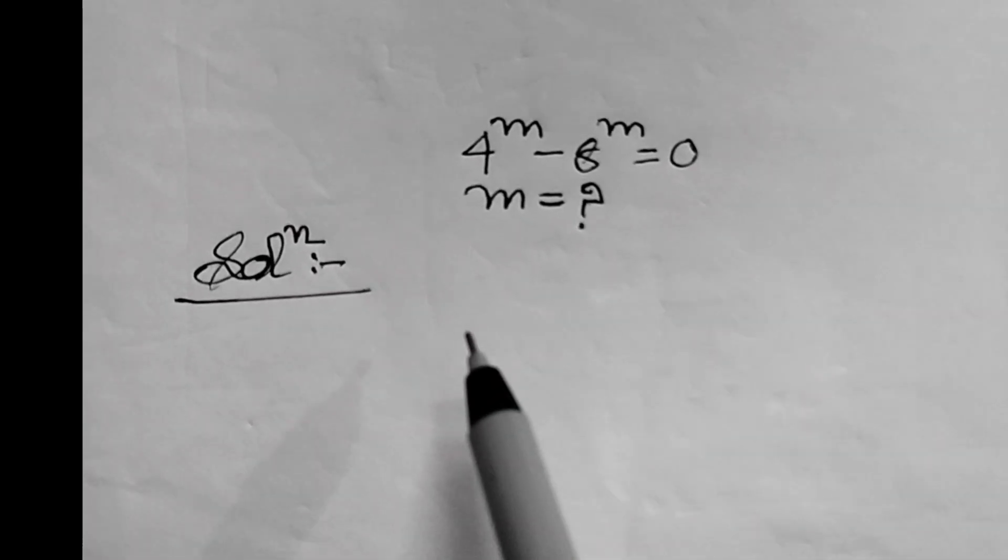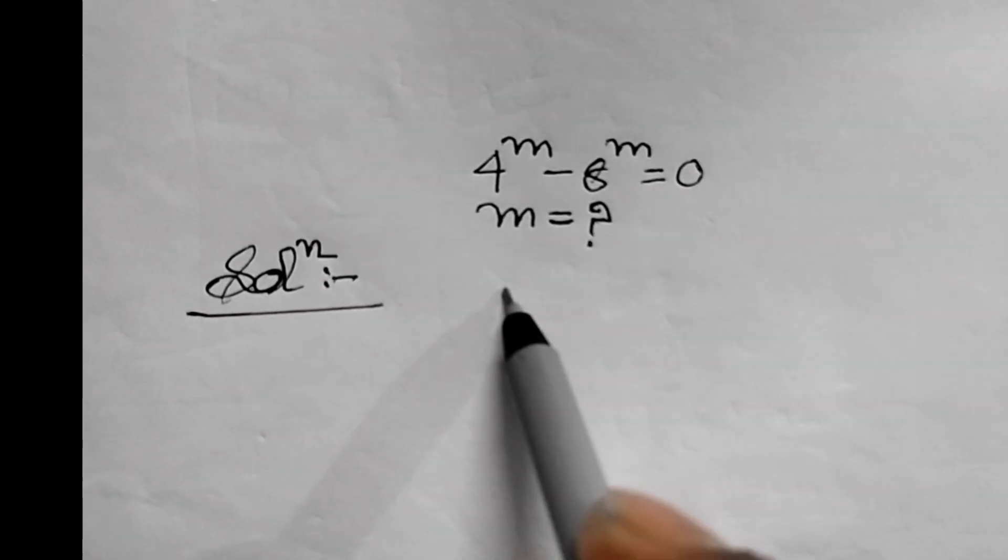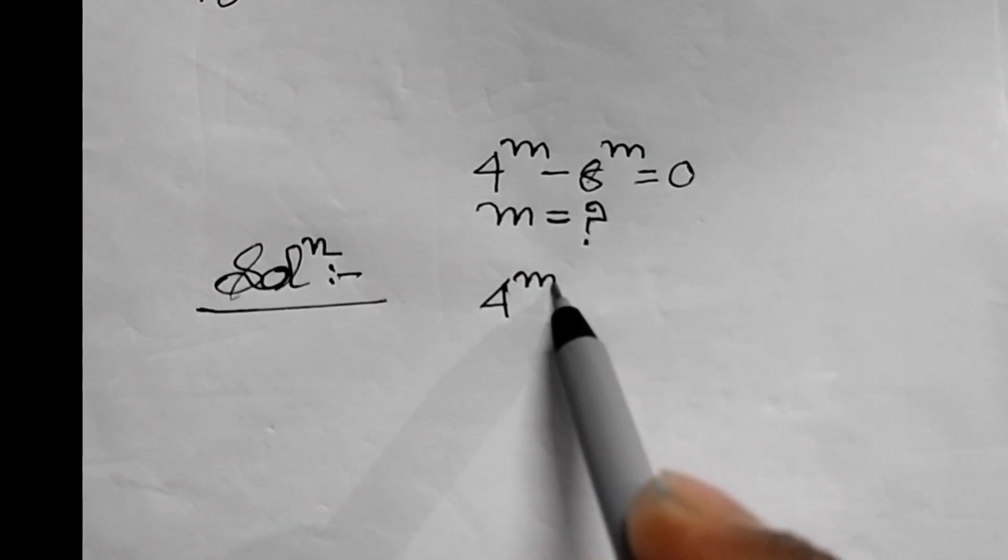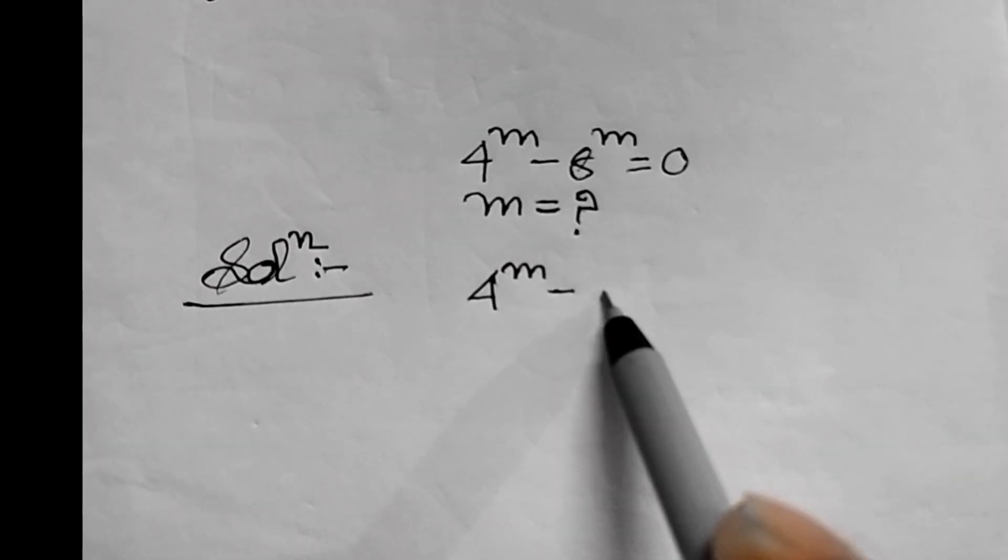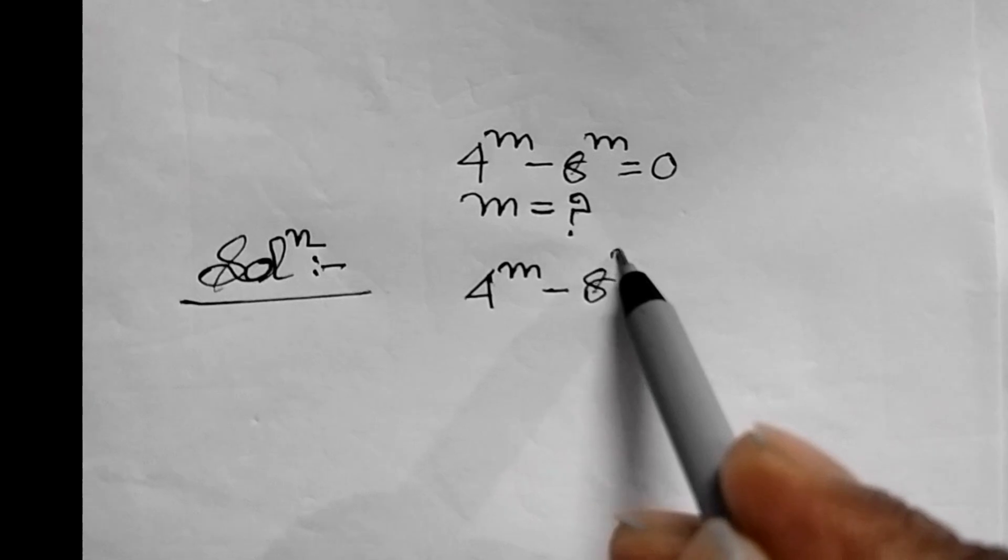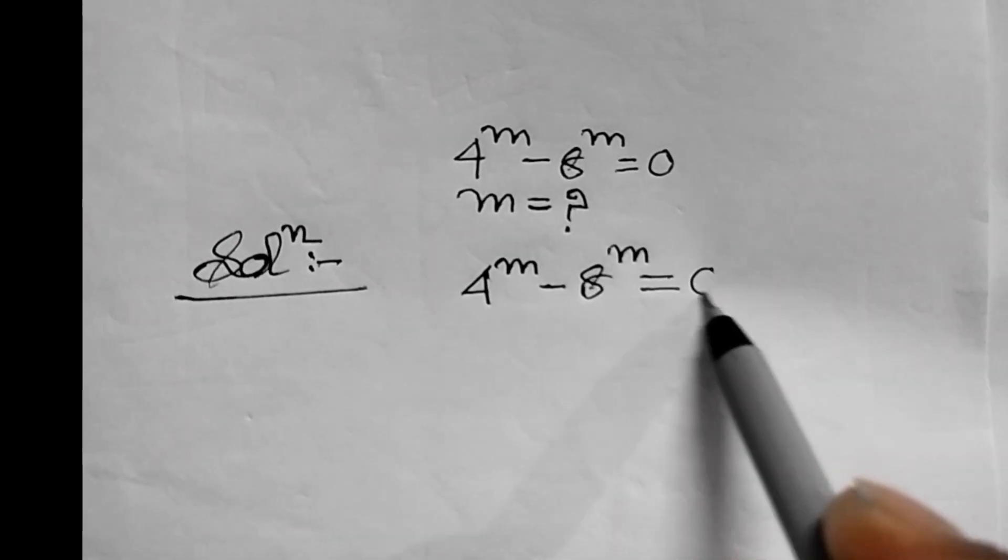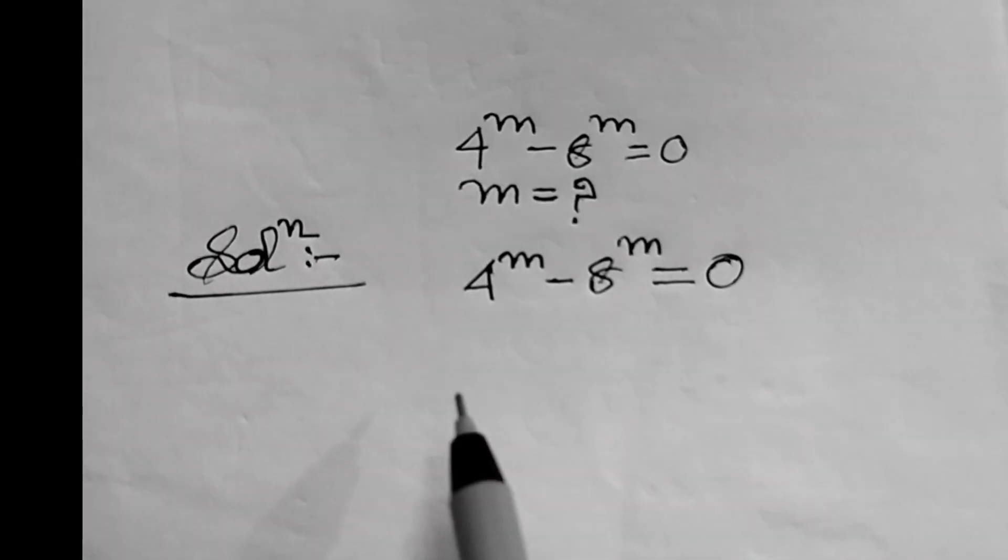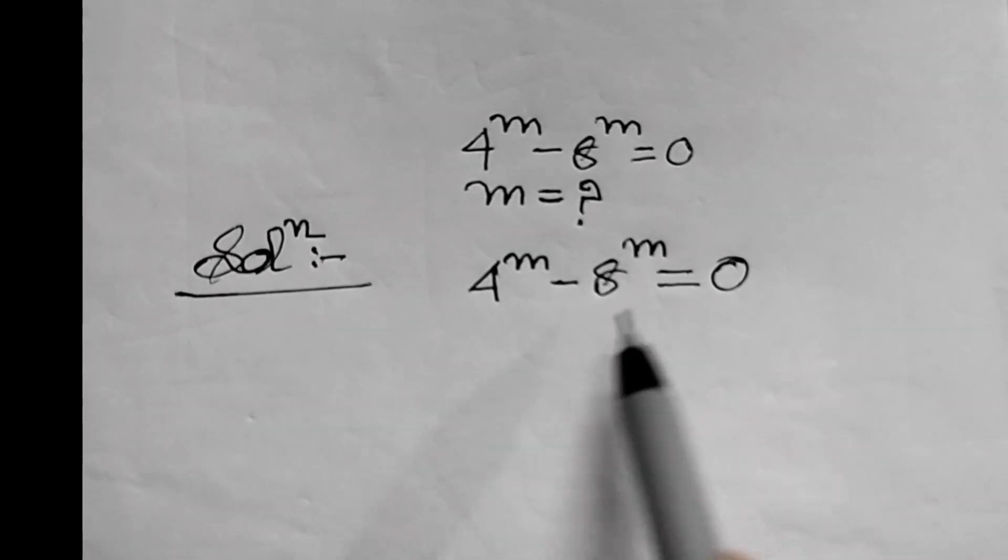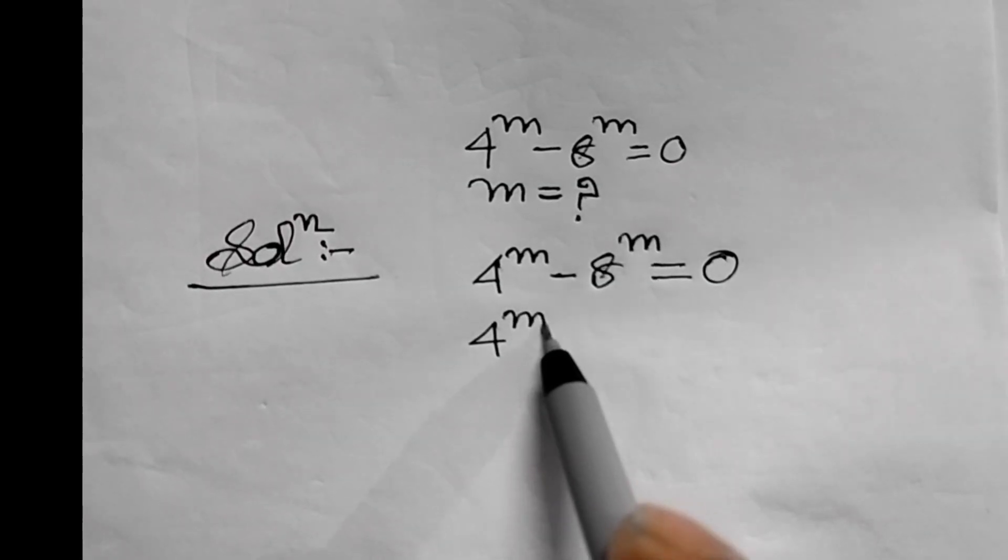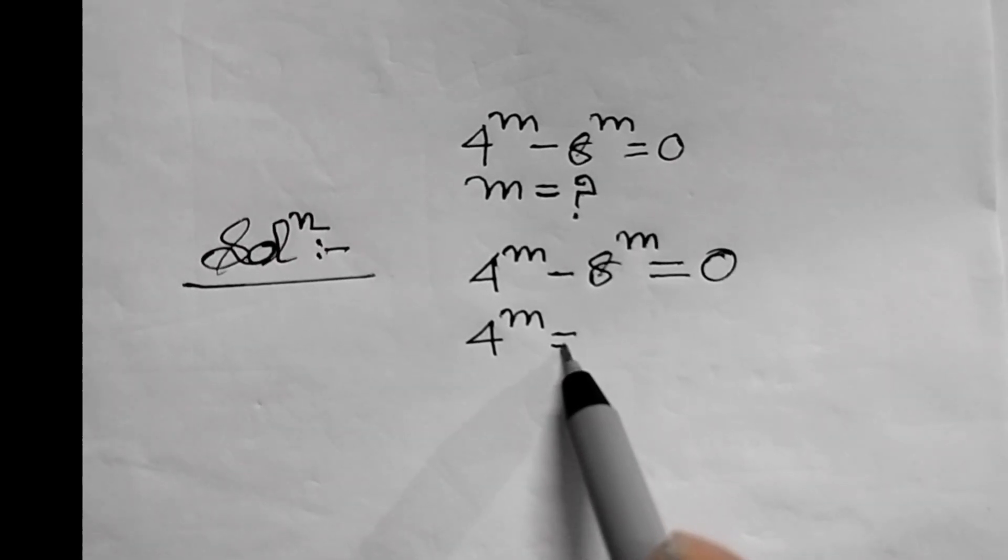First of all, we will write the given equation: 4 power m minus 8 power m equals 0. This equation can be written as 4 power m equals 8 power m.